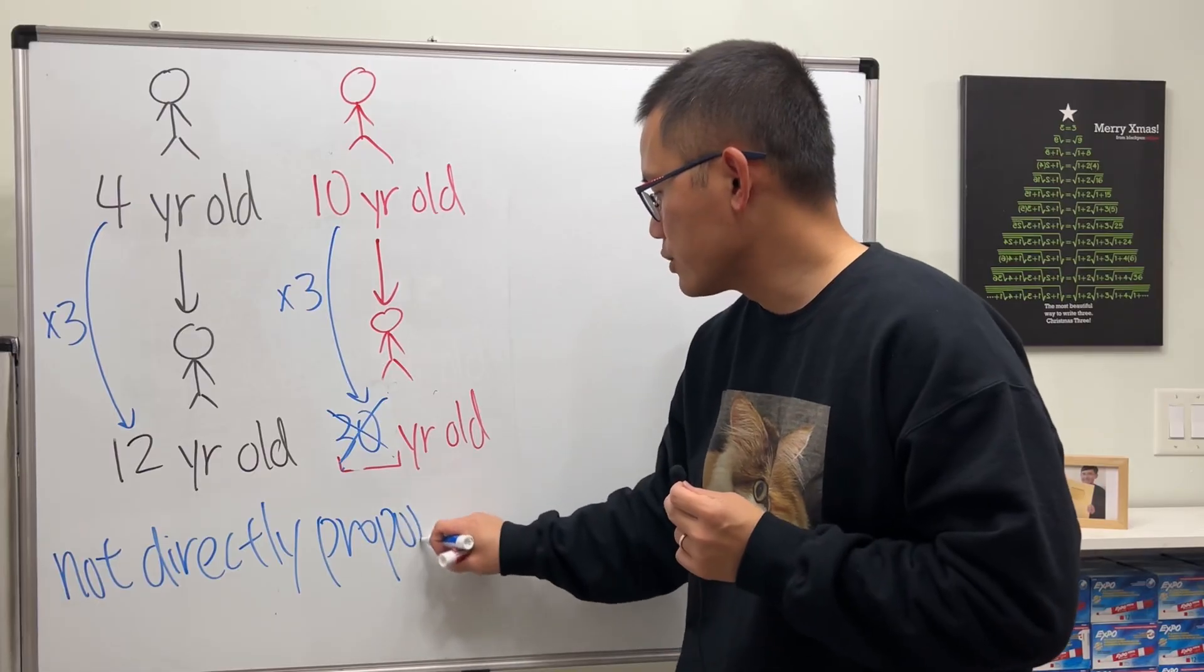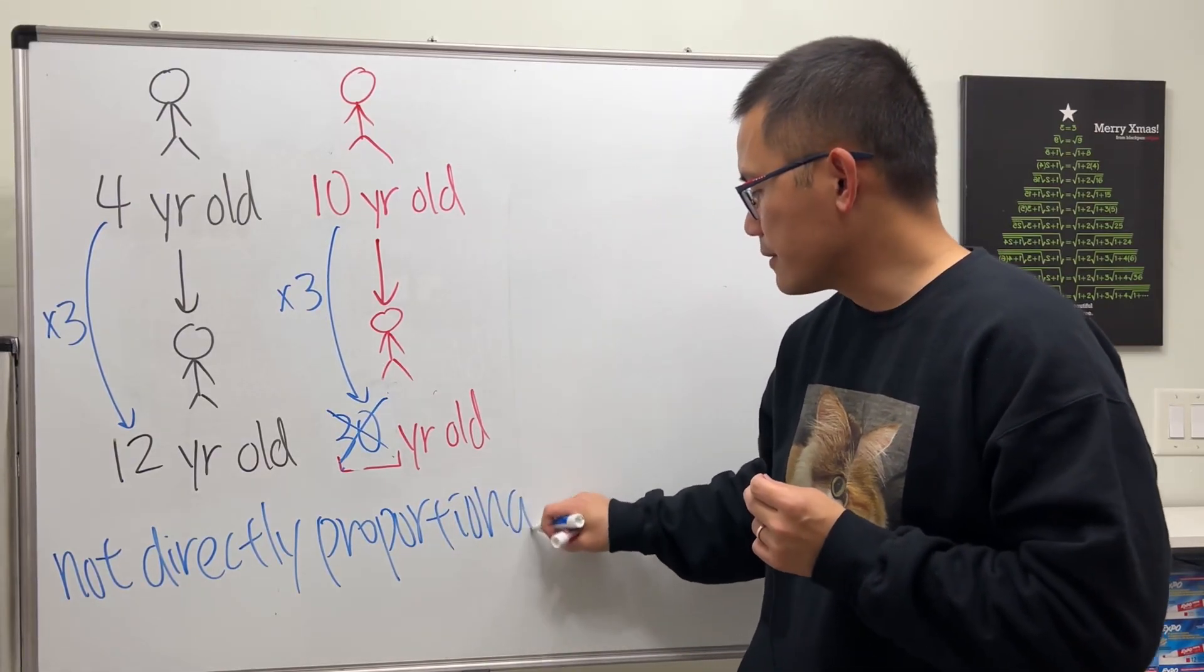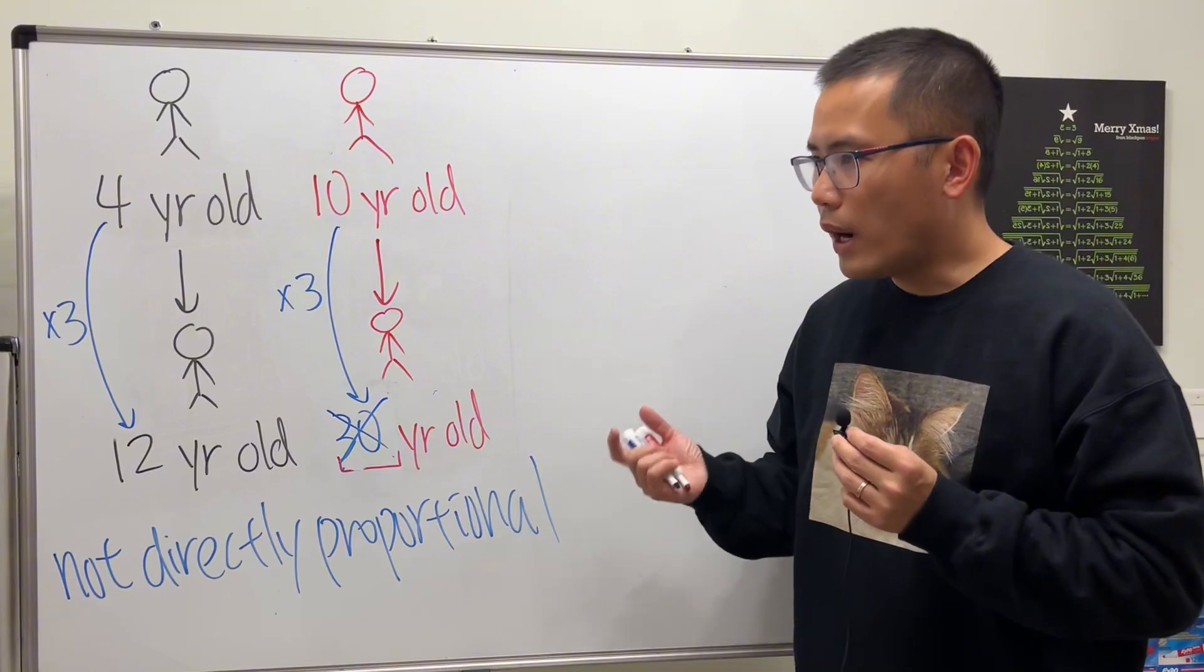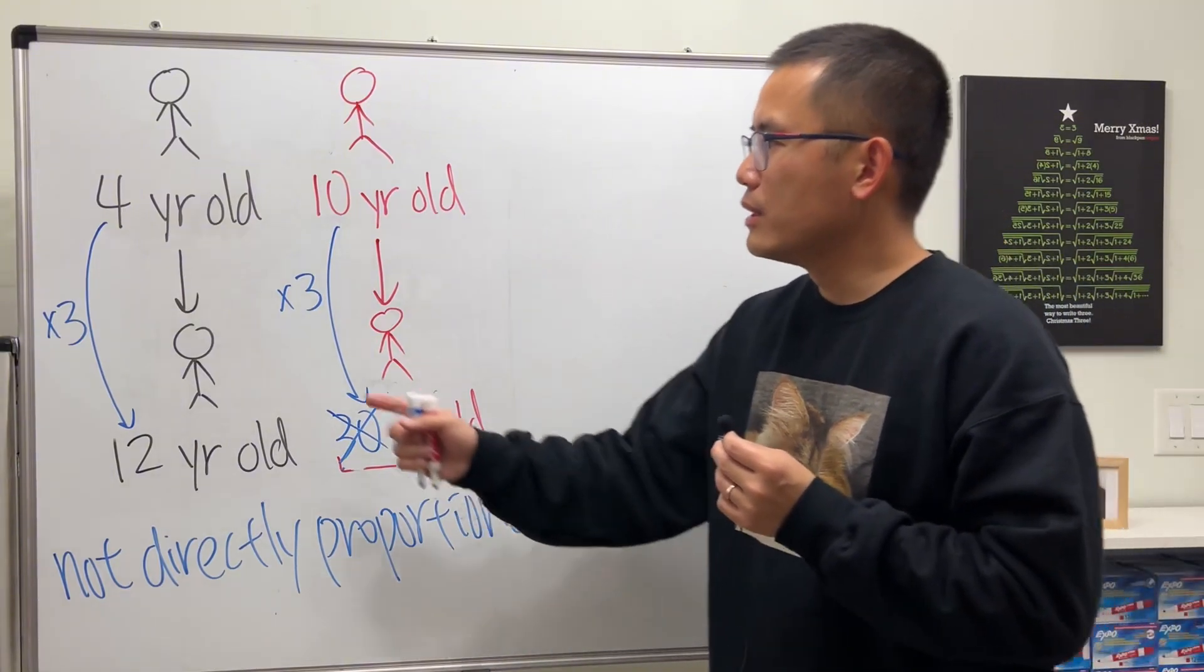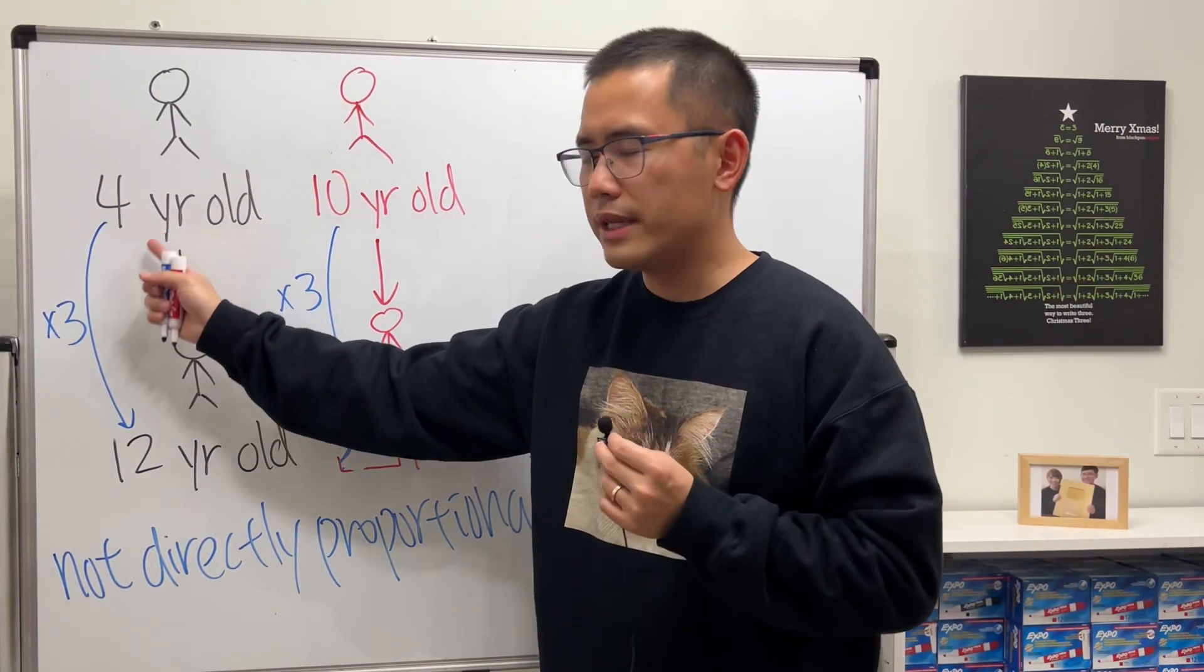We cannot just multiply to get the answer, and the reason why is because you have to think about how many years do you have to wait going from 4 years old to 12 years old? Eight years, right.